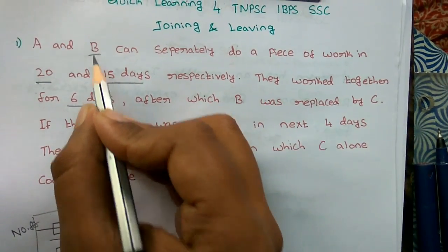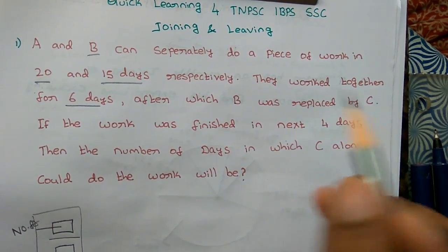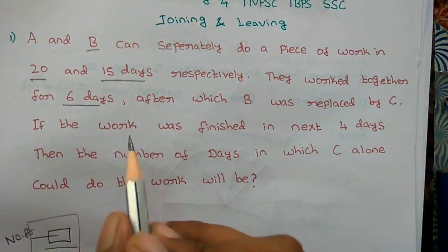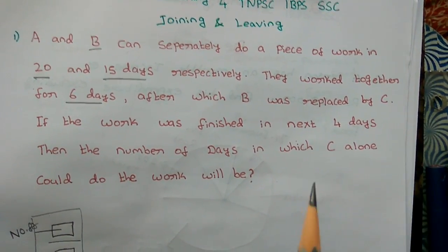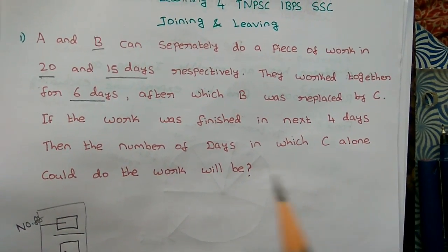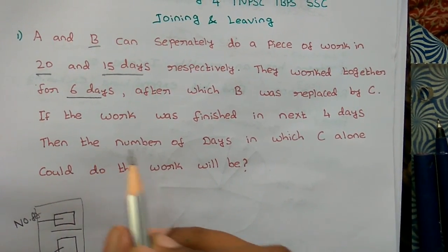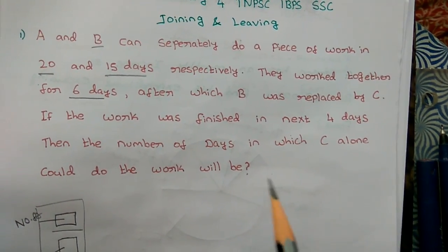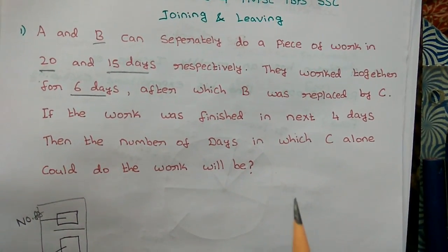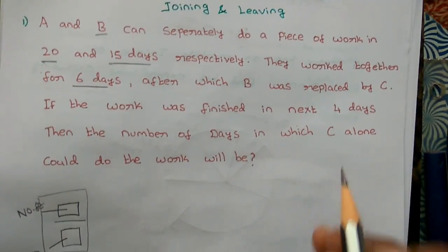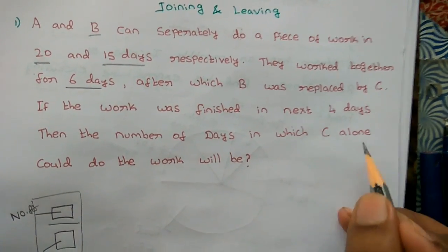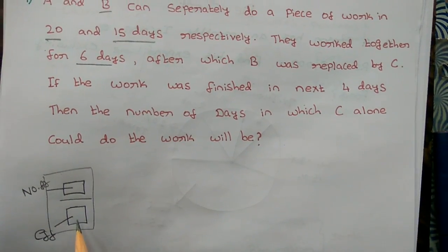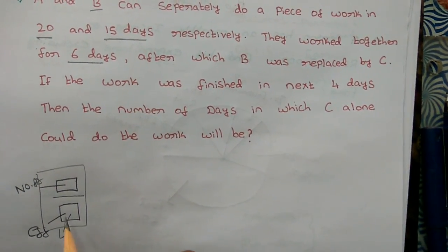After which B was replaced by C. If the work was finished in the next 4 days, then the number of days in which C alone could do the work will be — if the work is finished in next 4 days.